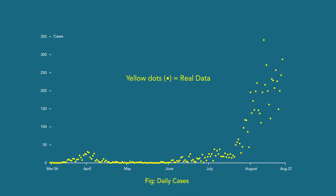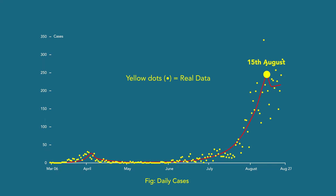Let's have a look at some real data. This plot shows numbers of daily cases recorded from March 6. This red plane here shows the assumption on the fit for the real data, while starting in June 10, it successfully quarantined 15% of asymptomatic people through contact tracing.